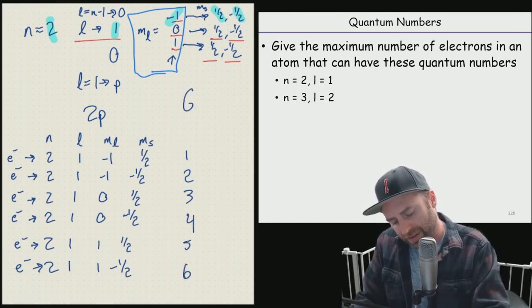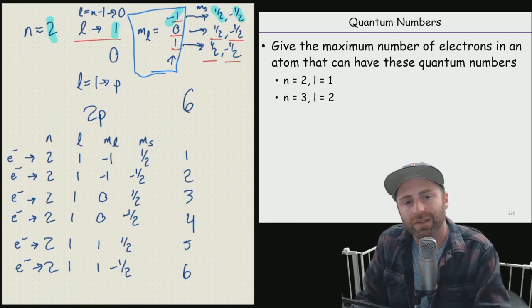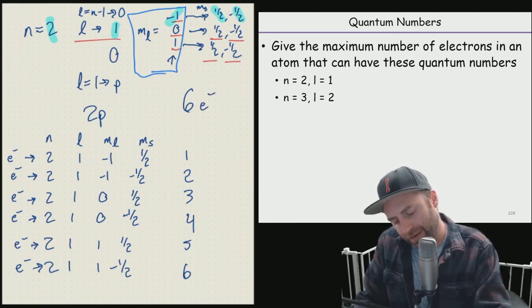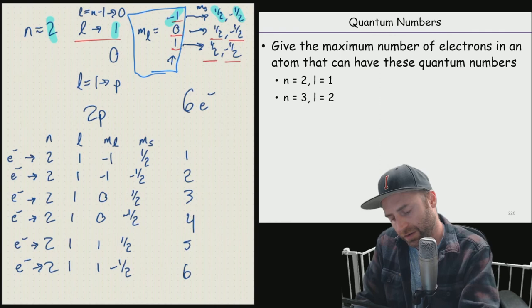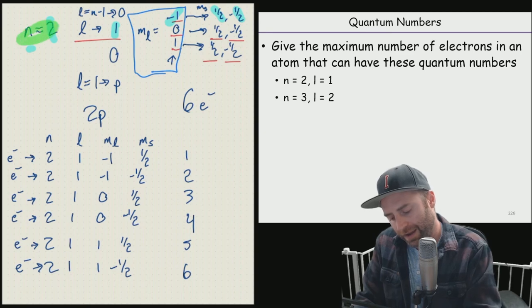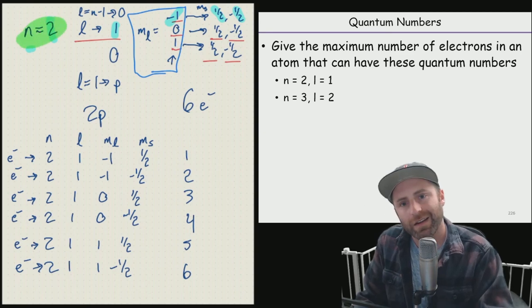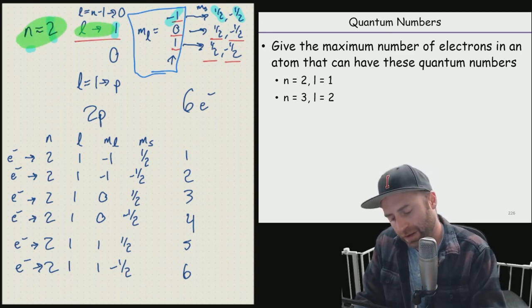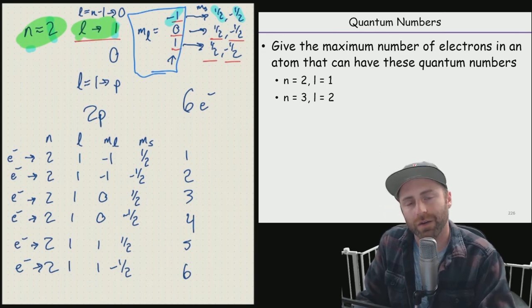So six possible electrons that can start with N equals two and L equals one.